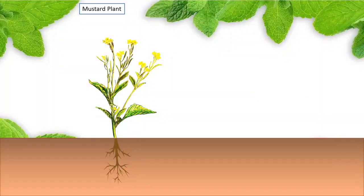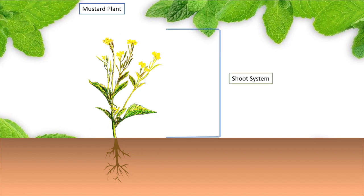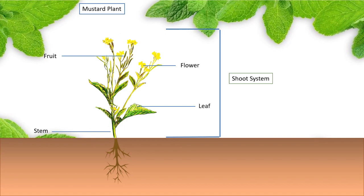The system above the ground which we see is called the shoot system. The shoot system consists of stem, leaf, flower and fruits. We will learn about the leaf and the flower of a plant in detail.